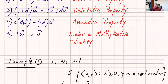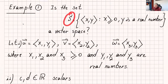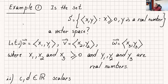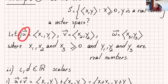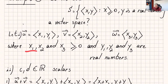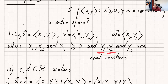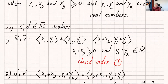Let's go over an example. You're given the set with vector components x, y where x is greater than or equal to zero and y is a real number. Before starting the proof, I define u = (x1, y1), v = (x2, y2), and w = (x3, y3). For all three vectors, since they're in S, x1, x2, and x3 are greater than or equal to zero, and y1, y2, y3 are real numbers. You also have to define your scalars.